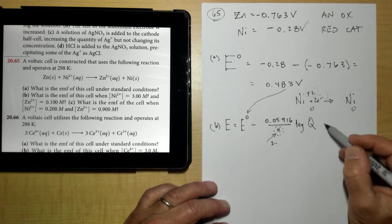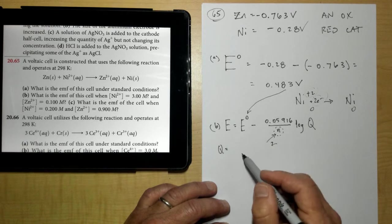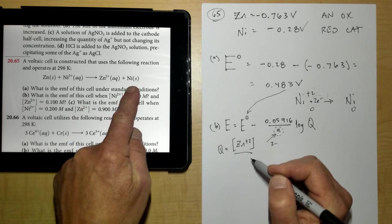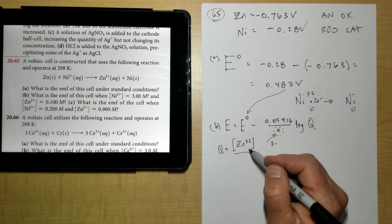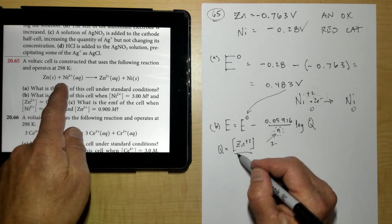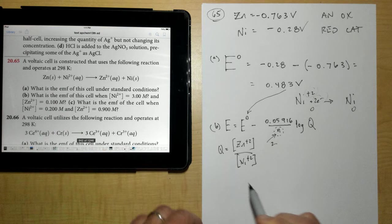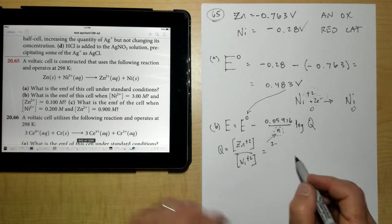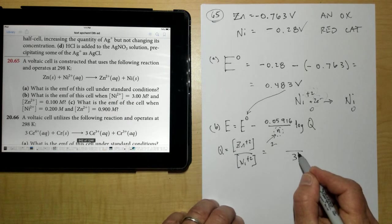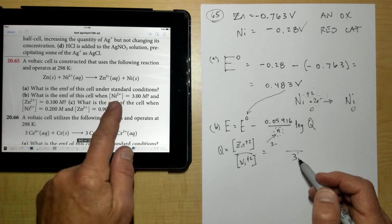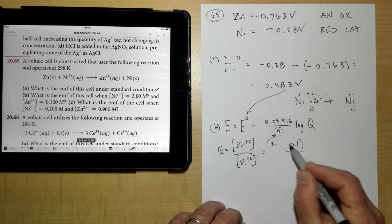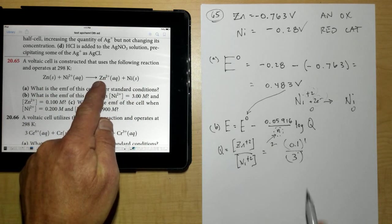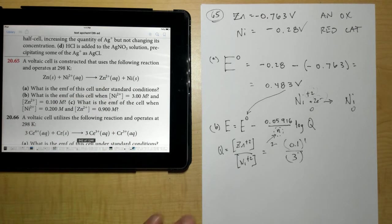And then Q, Q is going to be my products divided by reactants. My product is Zn²⁺, so I need the concentration of that. Nickel, of course, is a pure solid, so that's not going to be in the expression. And then over here, Zn is solid, and so my Ni²⁺ is going to go over here on this side. So looking at letter B right here, it says Ni is, I'm sorry, 3 molar, and that's just going to be the first power because there's only one of them. And then zinc is going to be 0.1 molar, and that's going to be to the first power as well because there's only one of them. And if there was a 2 in front of there, I'd have to square it, but there's only a 1, so I don't have to.